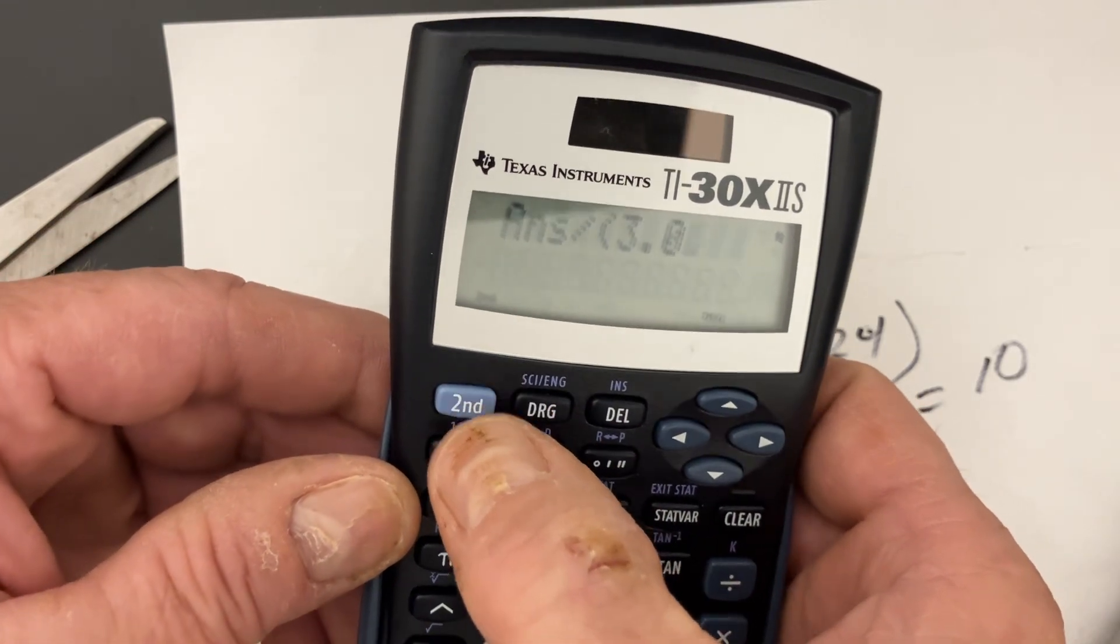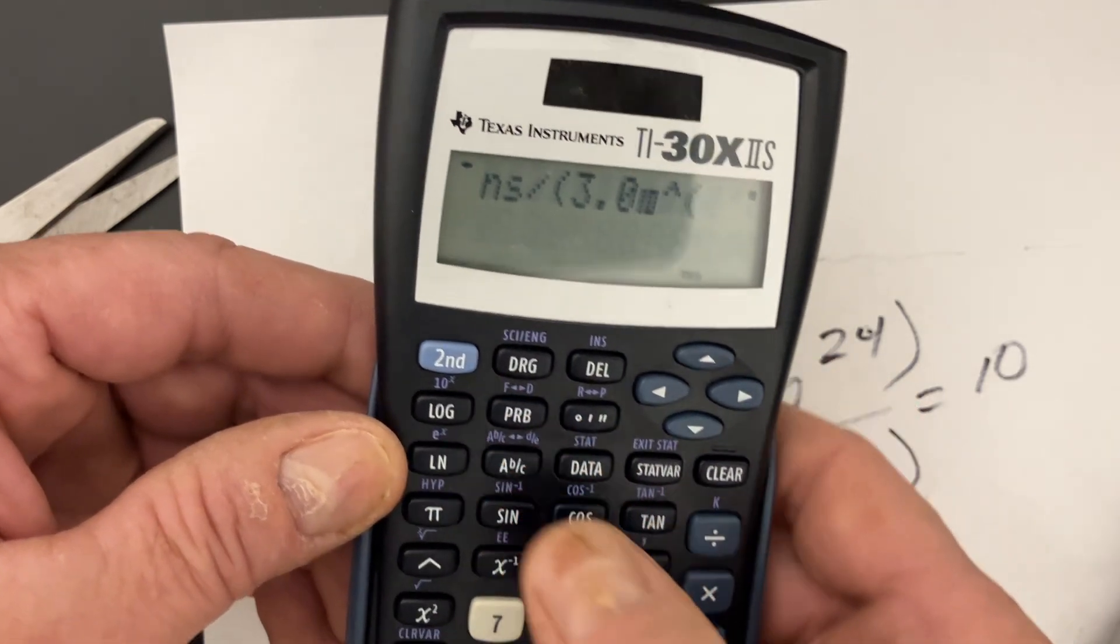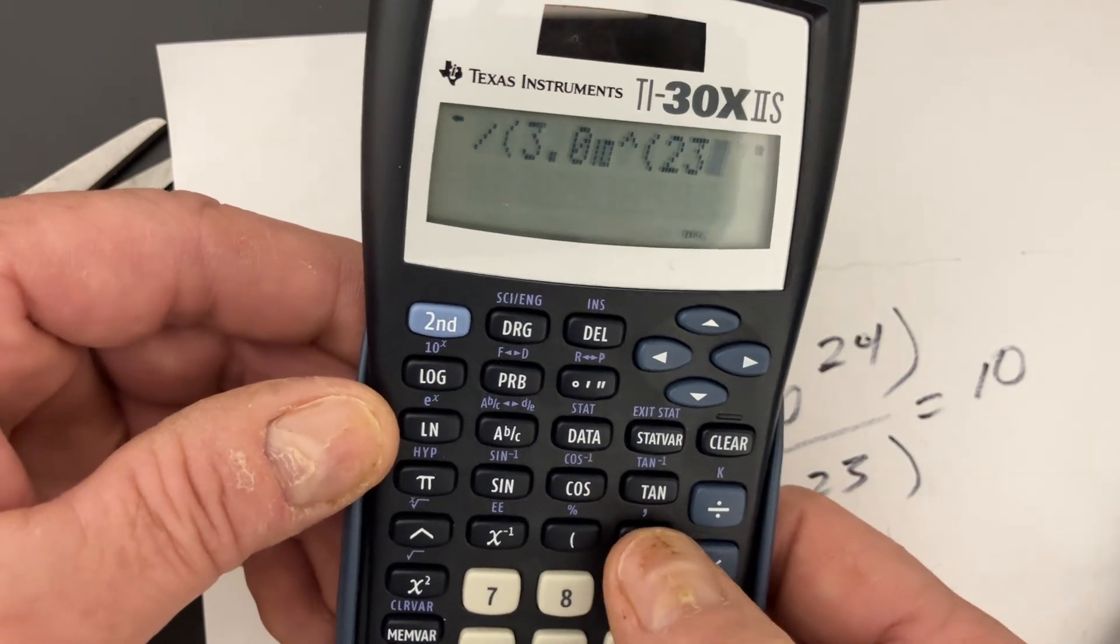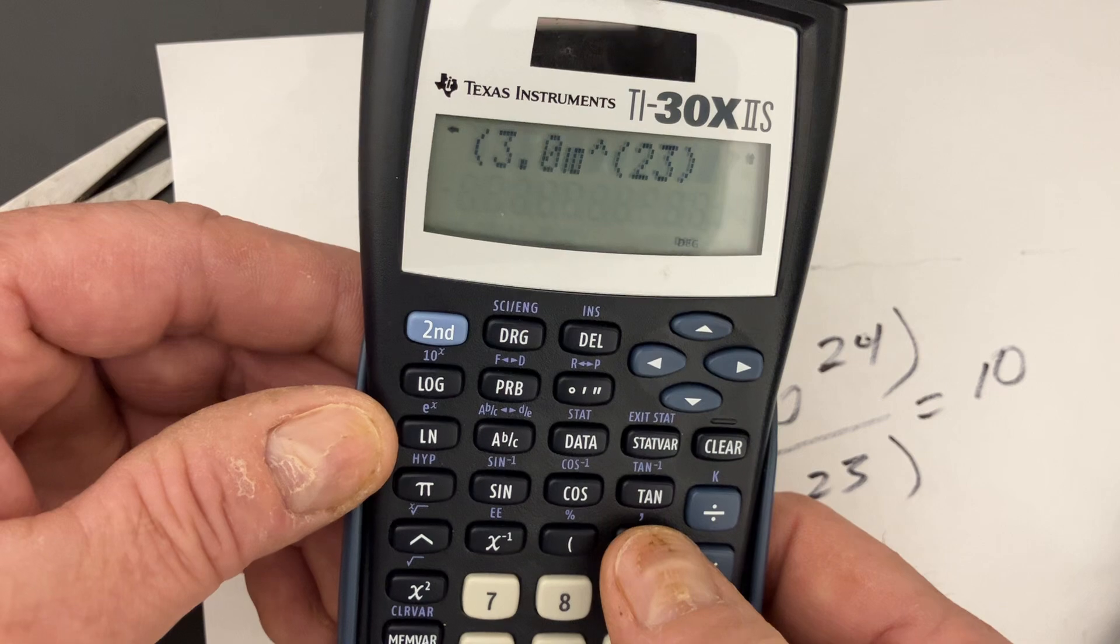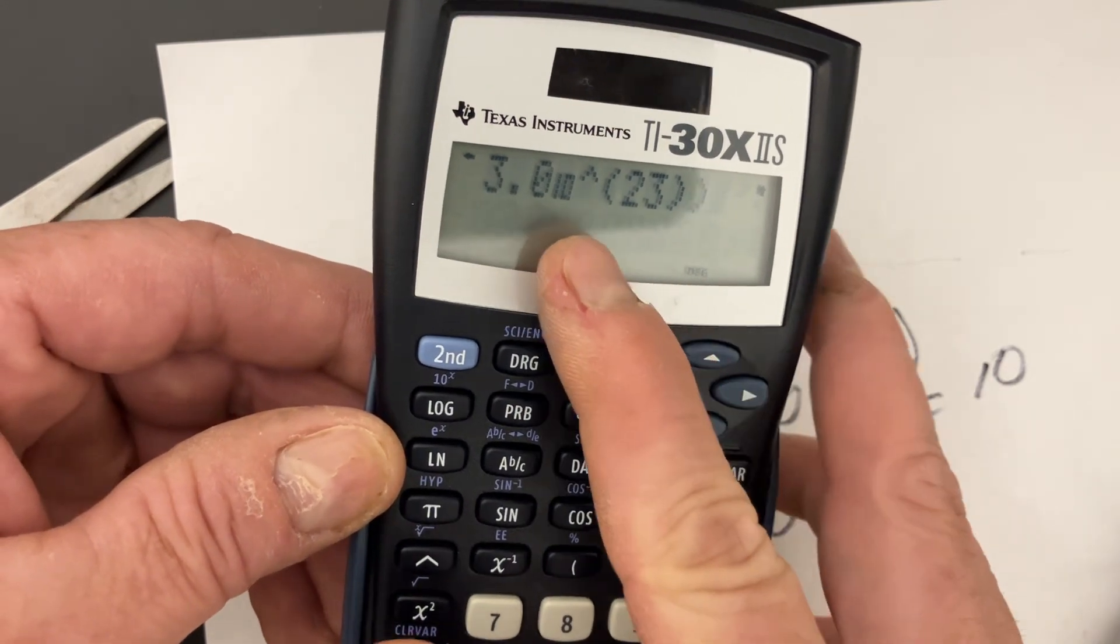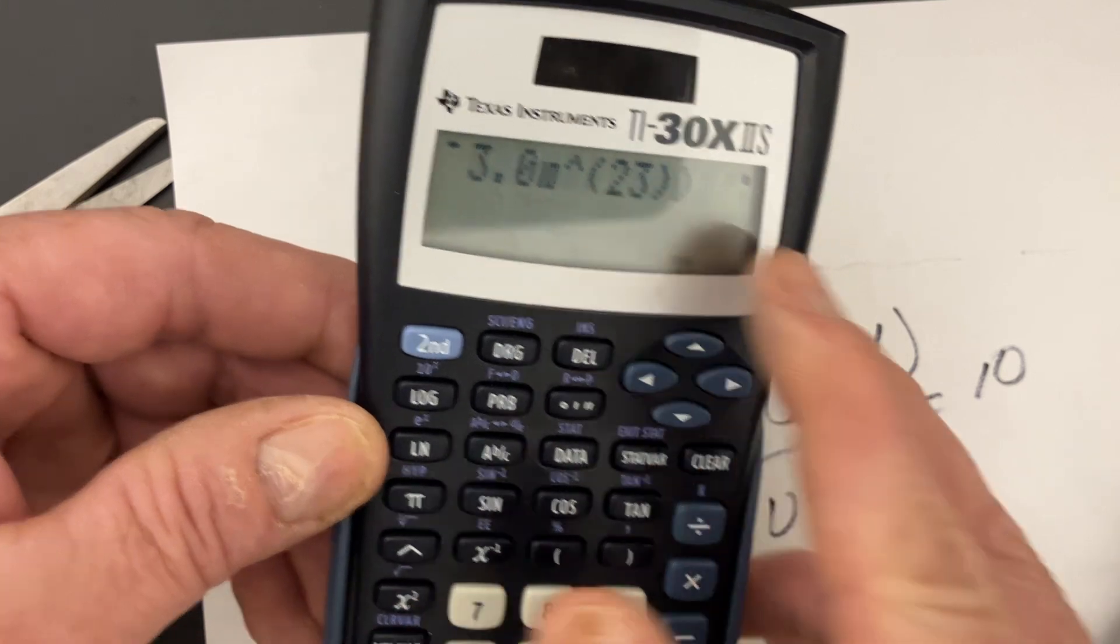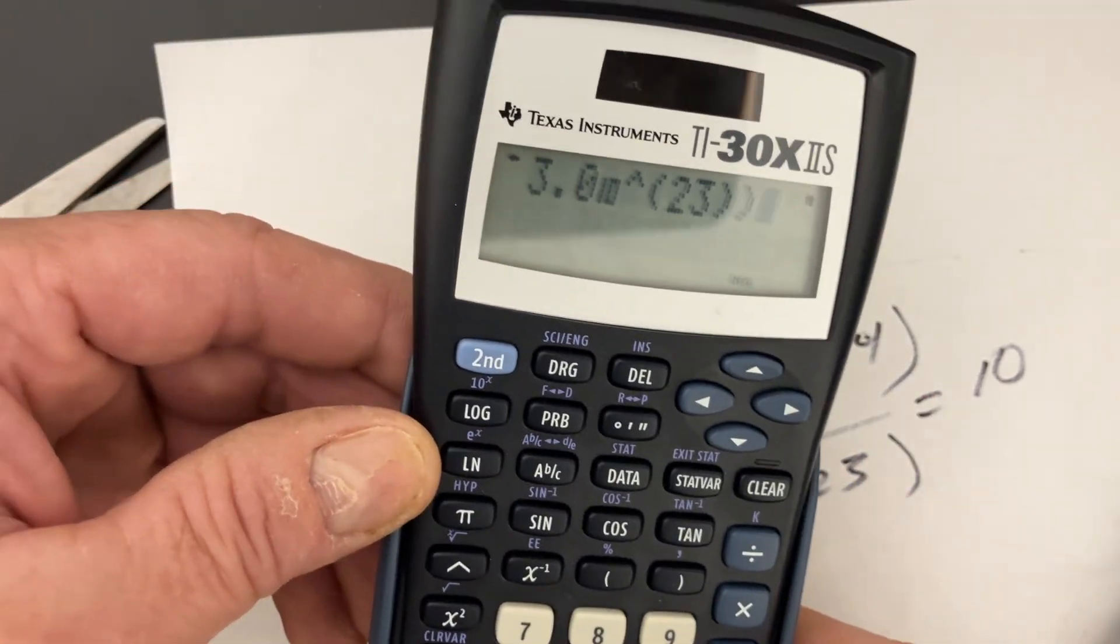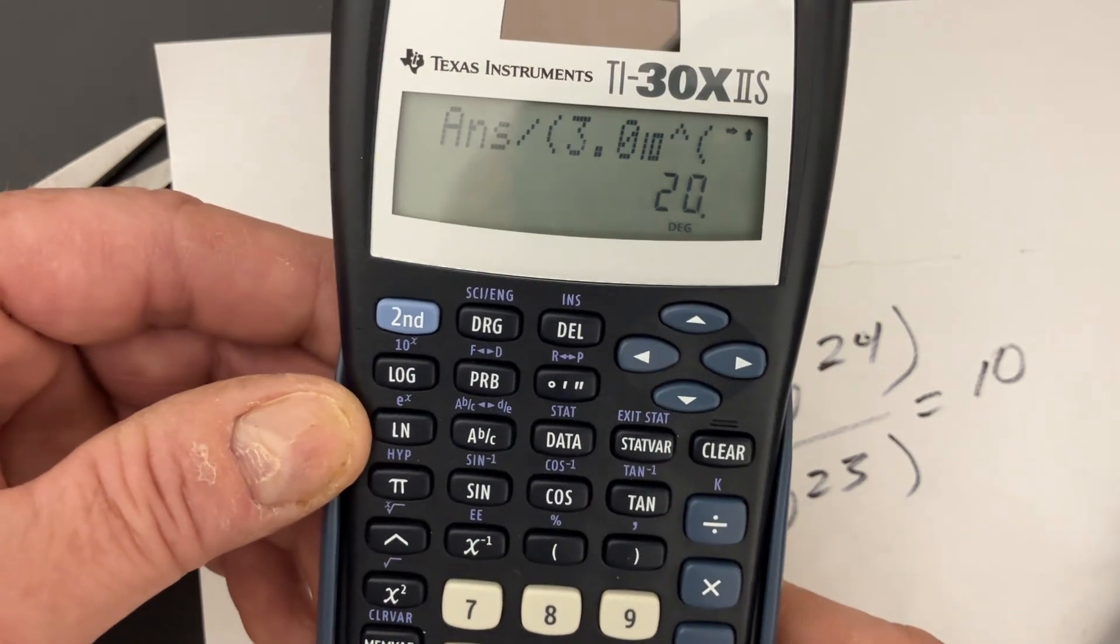Hit that second term again because that gets us to the 10 to the 23rd. I'm going to close the bracket, and then I have to close it again, because the closing of the bracket on the 23 is for the 10, and the closing of the bracket on the back of that is for the whole thing. I'm going to hit equals, and that does indeed give me 20.